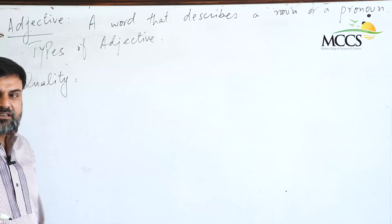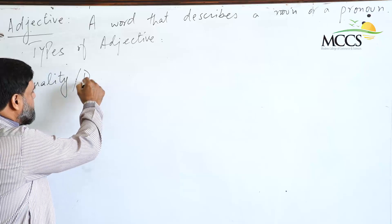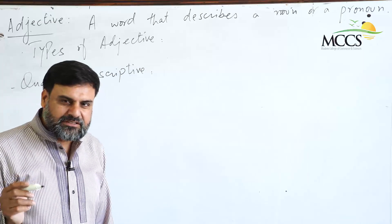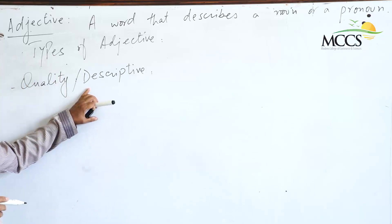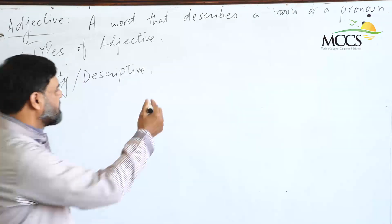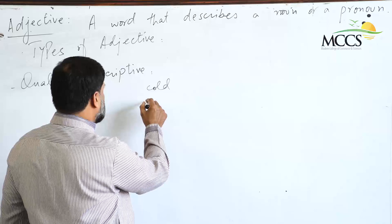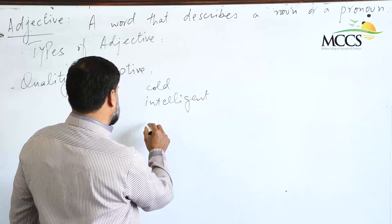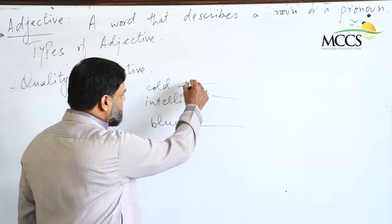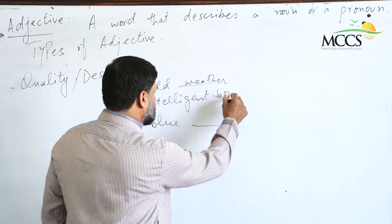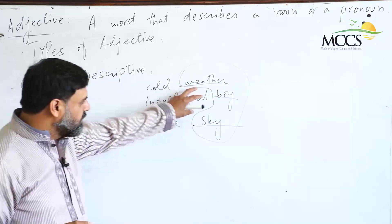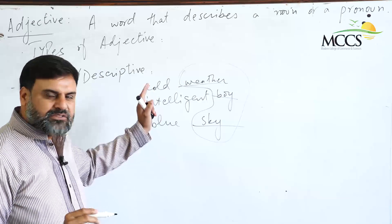The first type we are going to discuss is the adjective of quality — this is the descriptive adjective. The majority of adjectives we use belong to this category; these are descriptive words that show qualities. For example: cold, intelligent, blue. So we have cold weather, intelligent boy, blue sky. You can see all the second words are nouns, and the words before them are adjectives describing those nouns.